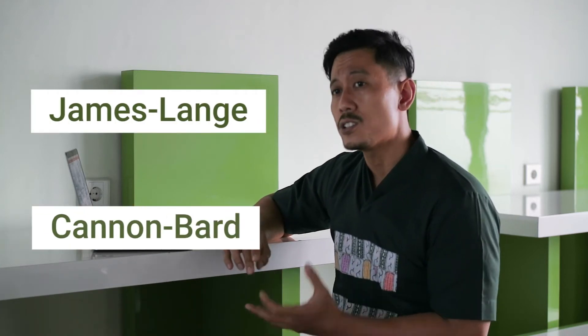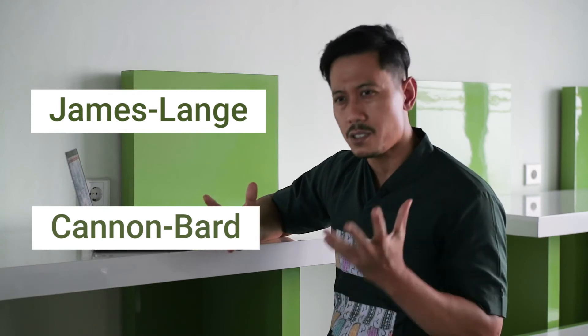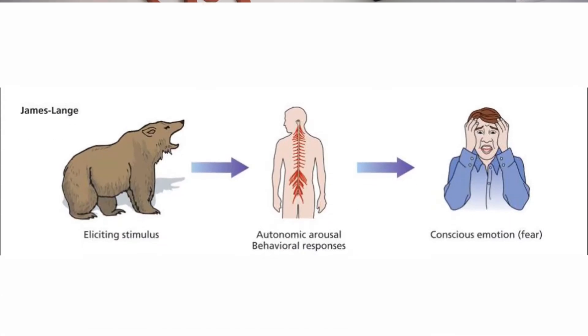There are two popular theories of emotion: James-Lange and Cannon-Bard. In James-Lange theory, when we see an object it is going to elicit physical responses, and then after that people are going to think about what kind of emotion they have. So the conscious emotion experience happens after the physiological responses.